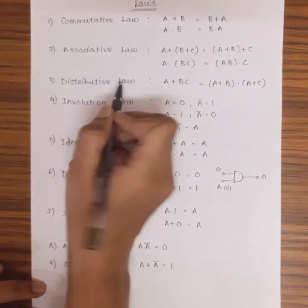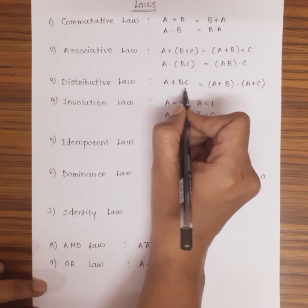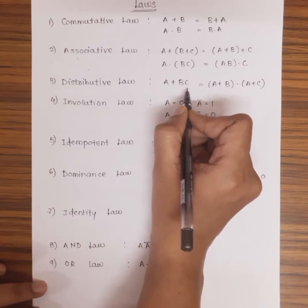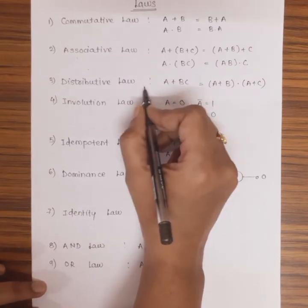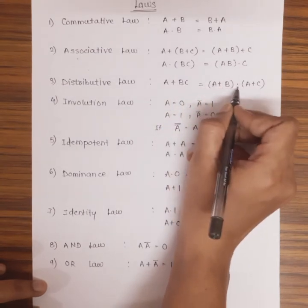Third is distributive law. A + BC is a given expression. On application of the distributive law, the OR operator gets distributed over this AND.